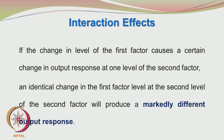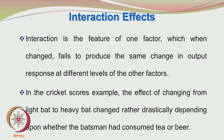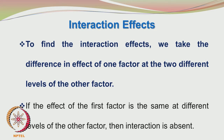When factors interact, if the change in level of the first factor causes a certain change in output response at one level of the second factor, an identical change in the first factor at the second level of the second factor will produce a markedly different output response. Interaction is the feature of one factor which, when changed, fails to produce the same change in output response at different levels of other factors. In the cricket scores example, the effect of changing from a light bat to a heavy bat changed drastically depending on whether the batsman had consumed tea or beer.